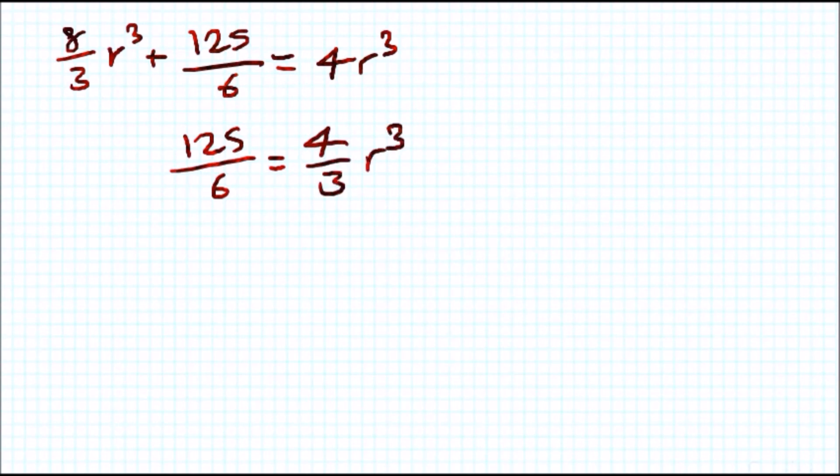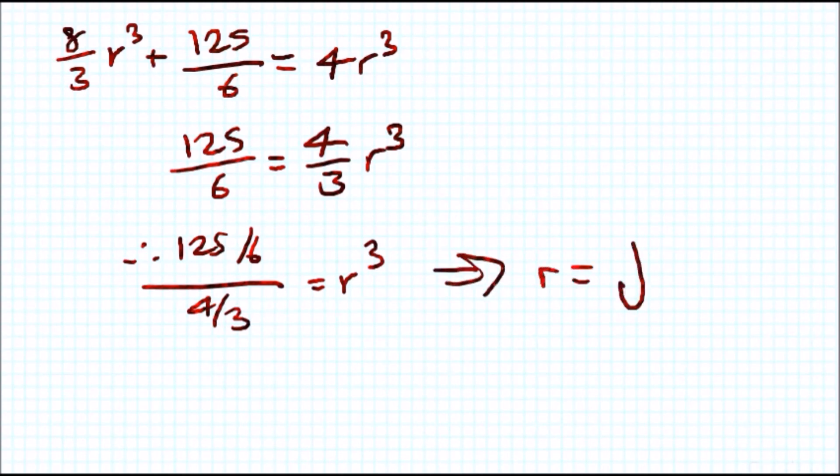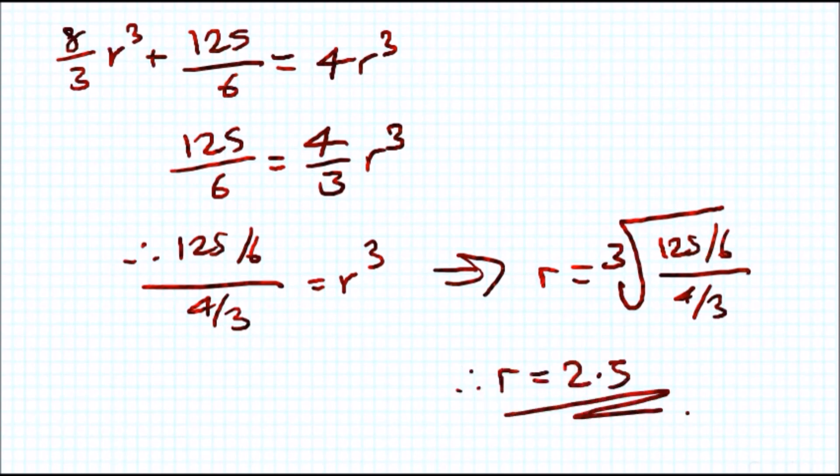Divide by 4 thirds, we're going to have 125 over 6 divide by 4 over 3, which equals r cubed. Therefore, the total radius would be the cube root of this. So r equals the cube root of 125 over 6 over 4 thirds, and this should give us 2.5. The radius is 2.5, guys.